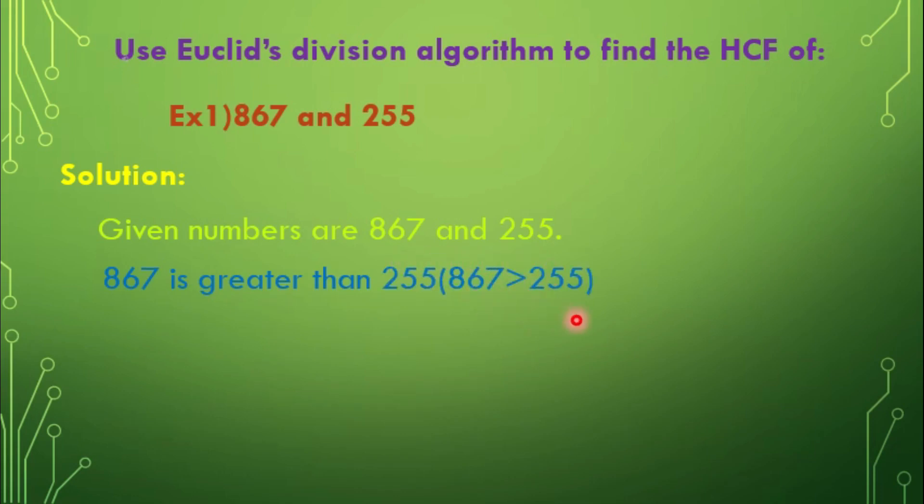In division, we have to always take the bigger number as the dividend and smaller number as the divisor. Let us apply Euclid's Division Algorithm now. Here, we have to do simple division. 867 divided by 255.